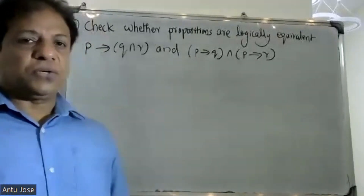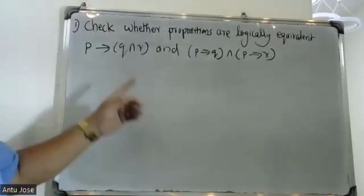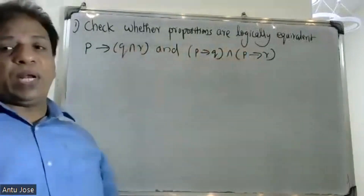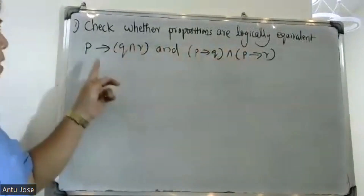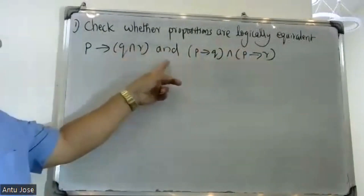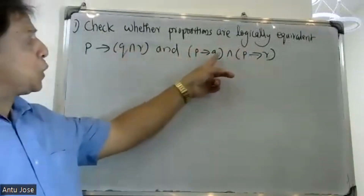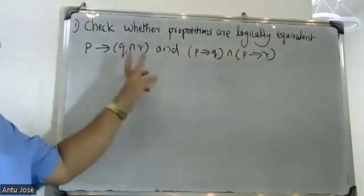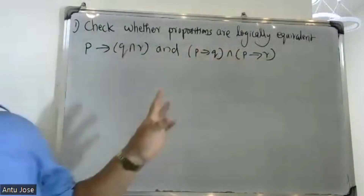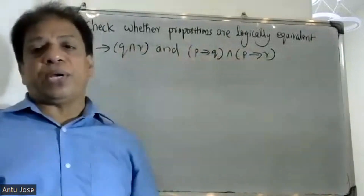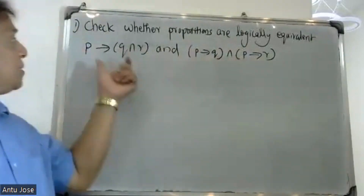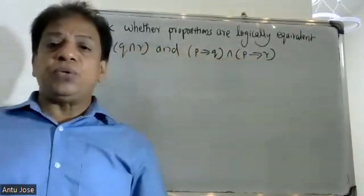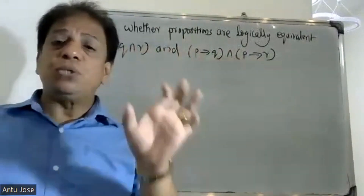Good morning students. Check whether the propositions are logically equivalent: p conditional q and r, and p conditional q and p conditional r. Two propositions are logically equivalent if S1 and S2 have the same truth values.